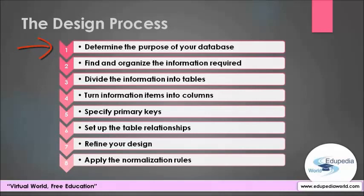Determining the purpose helps prepare you for the remaining steps. The second step is to find and organize the information required — gather all of the types of information you might want to record in the database. The third step is to divide the information into tables: divide your information into major entities or subjects such as product or order, and each subject becomes a table.